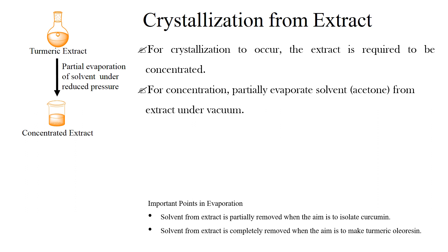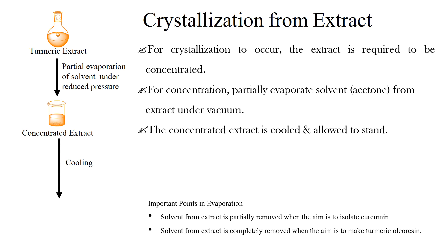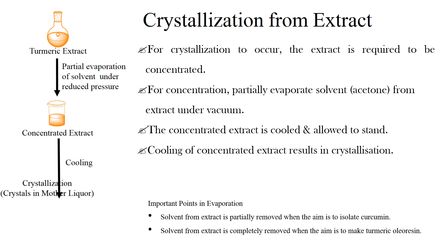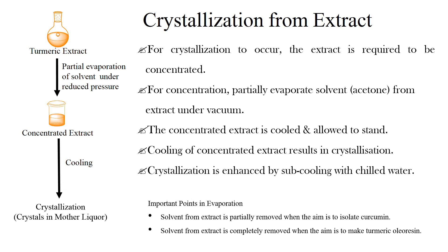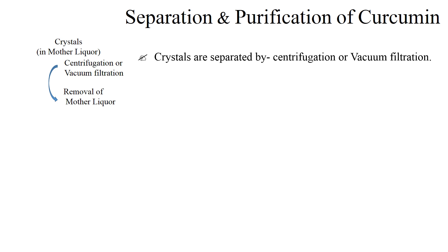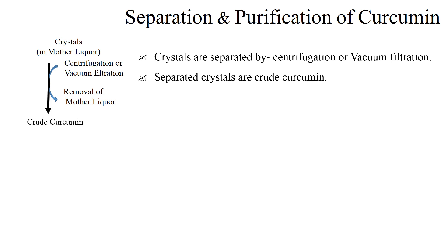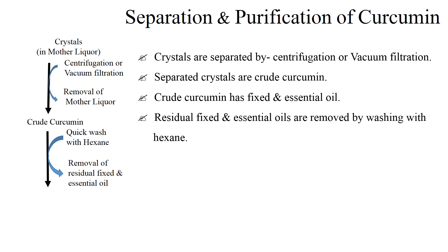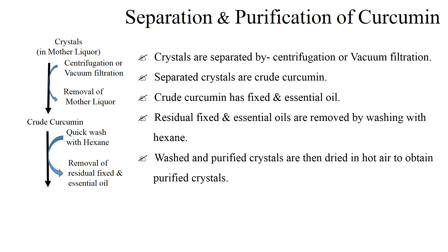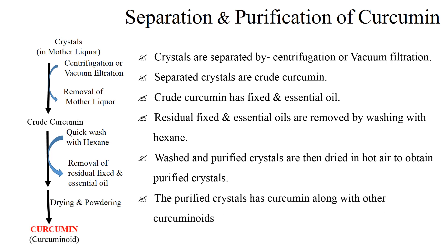Coming to the concentrated extract of turmeric — the concentrated extract is cooled and allowed to stand. Cooling of the concentrated extract results in crystallization, which is enhanced by subcooling with chilled water. The crystals from the mother liquor are separated by centrifugation or vacuum filtration. The crude crystals contain impurities of fixed oil and essential oil, which are removed by washing with hexane. The washed and purified crystals are then dried in hot air to obtain purified crystals containing curcumin along with other curcuminoids.